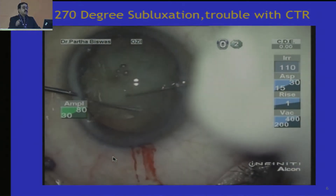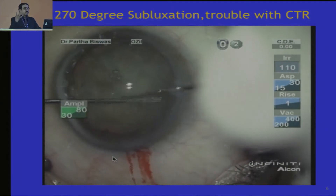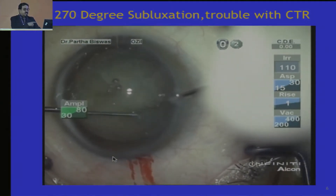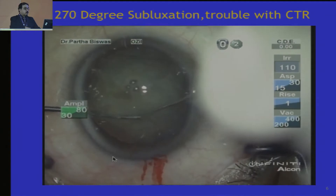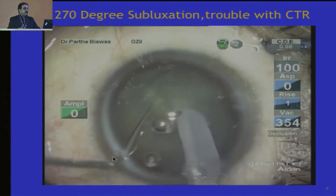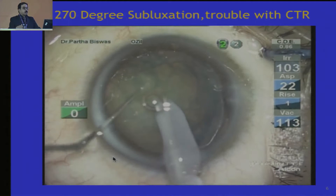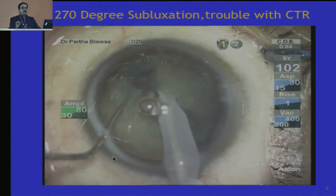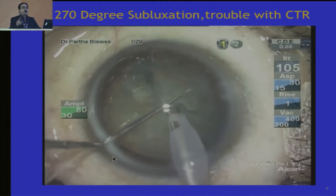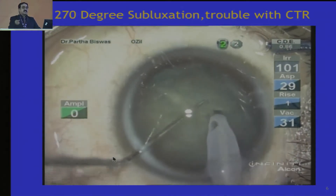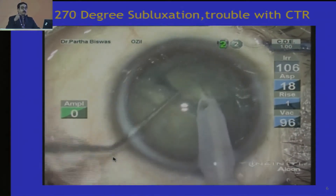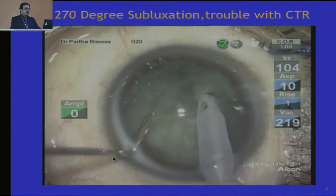With large subluxations, you do not have the support of the zonules and the bag to place in all these devices and you are trying to wiggle it in. So it has gone in this time quite well. You have to be 100% sure — especially with a well dilated pupil — that the CTR has actually gone into the bag and one end has not slipped out into the angle.